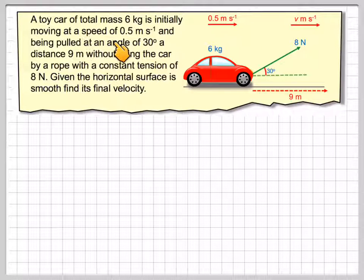A toy car of mass 6 kilograms is initially moving at a speed of 0.5 meters per second and being pulled at an angle of 30 degrees, a distance of 9 meters without lifting the car by a rope at a constant tension of 8 newtons.